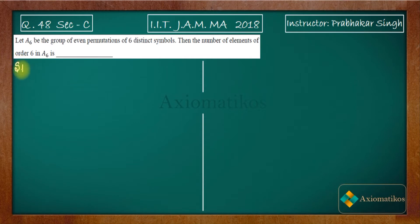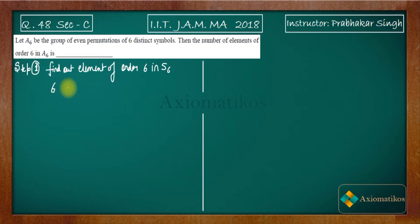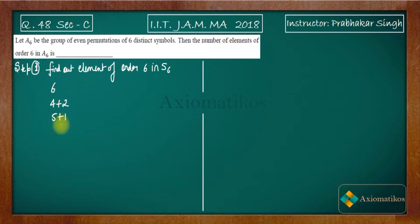There is no actual formula to find this, so we move step by step. Step one is to find elements of order six in S6. If you want to find elements of a certain order in S6, you have to find all the partitions of n. For n = 6, six itself is a partition, four plus two is also a partition, five plus one is also a partition.